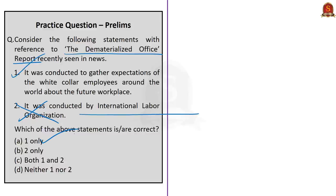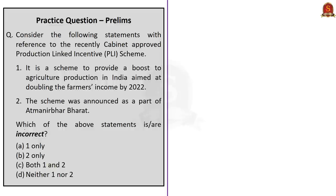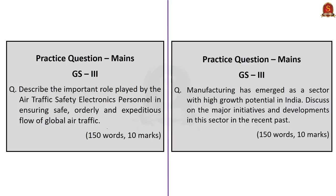Regarding the production-linked incentive scheme question: Statement 1 — that it is a scheme to boost agriculture production aimed at doubling farmer's income by 2022 — is incorrect, as it deals with the manufacturing sector. Statement 2 — that the scheme was announced as part of Atmanirbhar Bharat — is correct. The incorrect statement is statement 1, so the correct answer is option A, one only. Two main questions for GS Paper 3 have also been given for practice; you may write answers and post in the comment section.